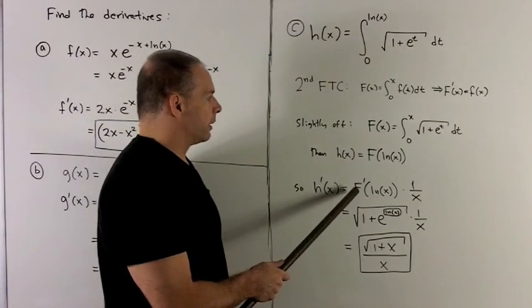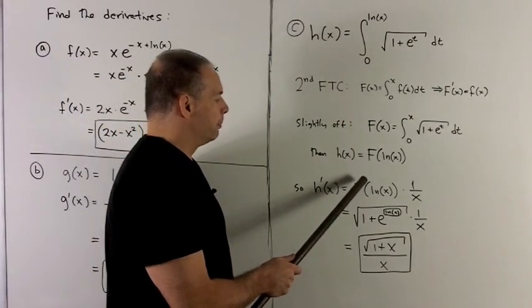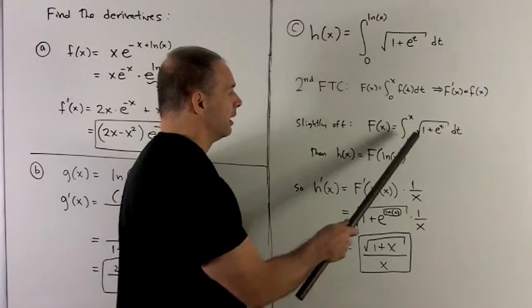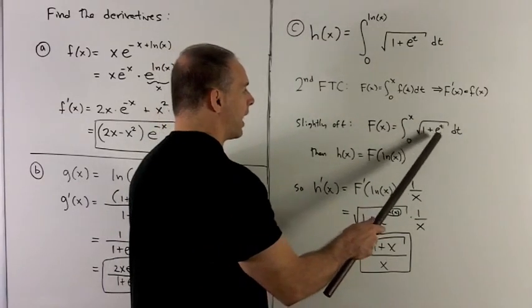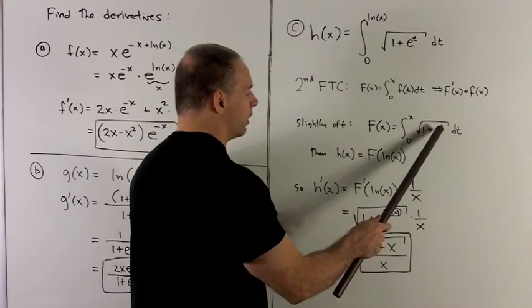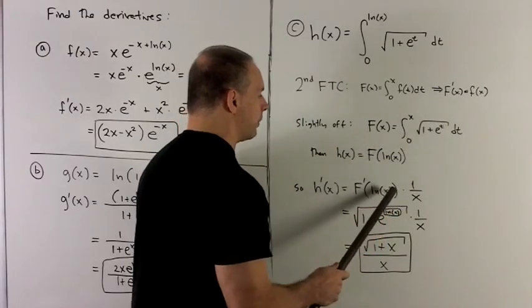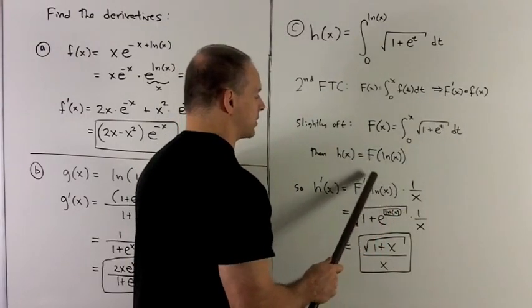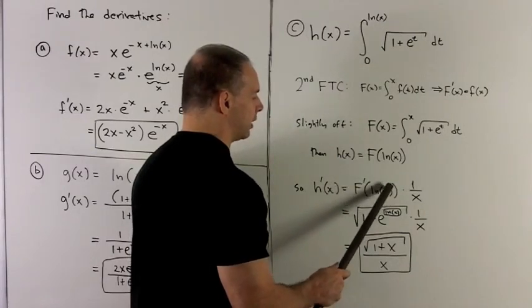We know from second fundamental theorem of calculus, big F prime is just going to be the inside. Wherever I have the t, I'm going to put an x. But here really what that means is wherever I have a t, I put the natural log of x. It's whatever's on the inside here.